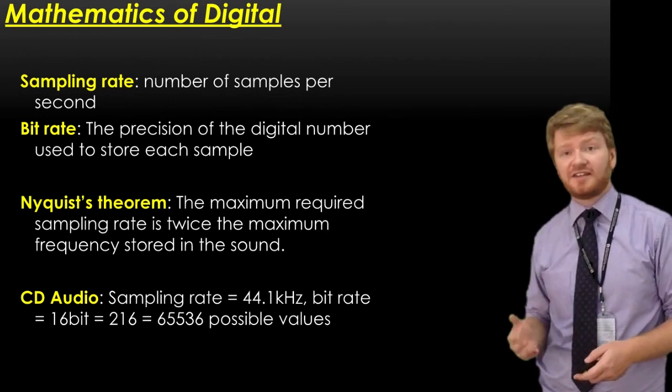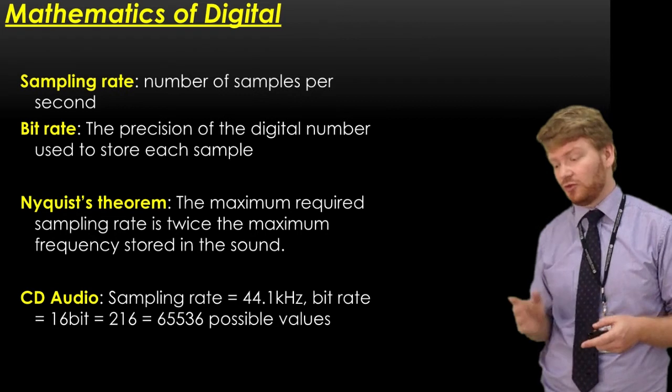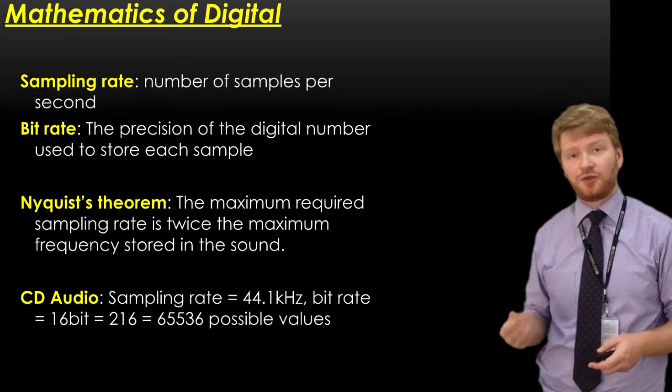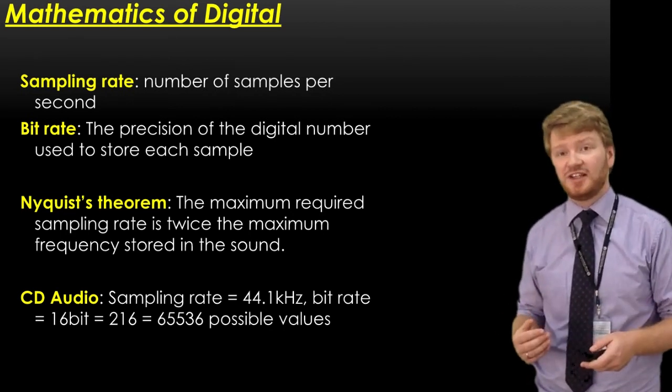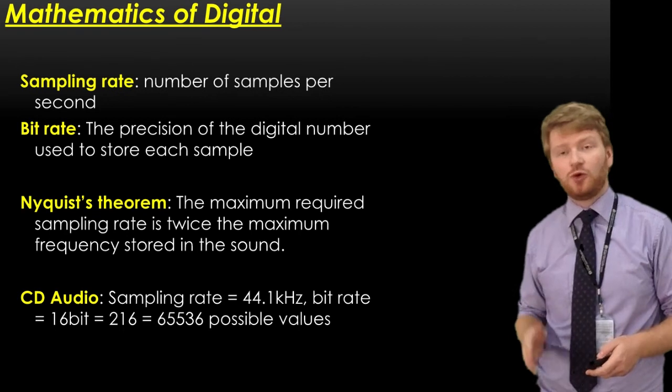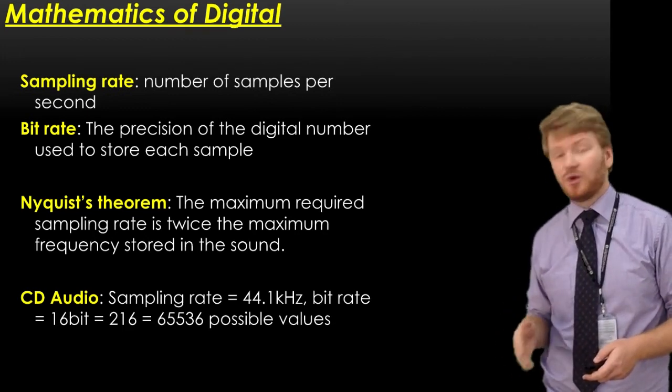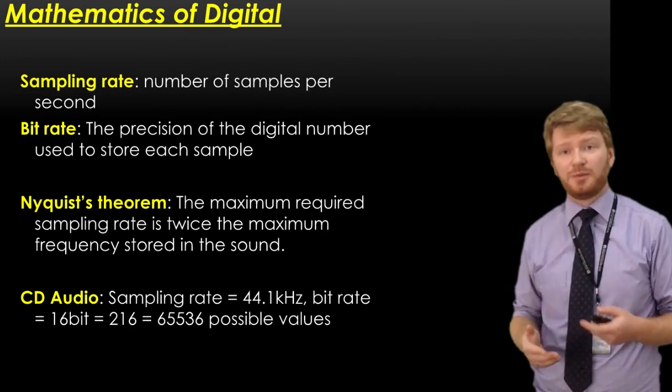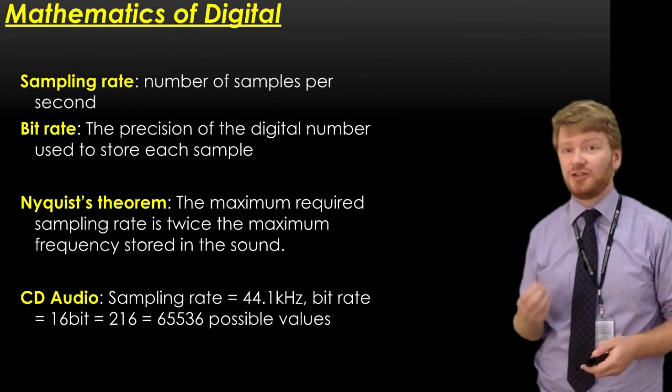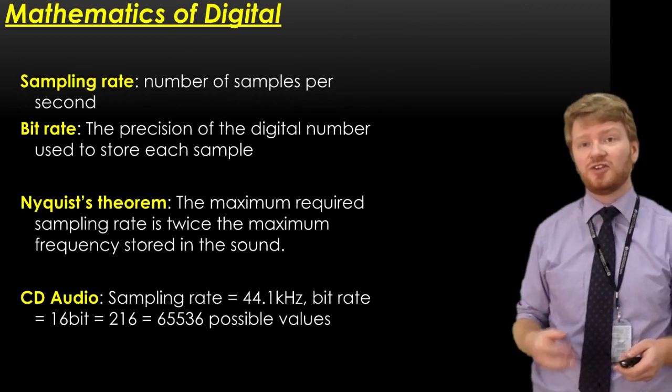The bit rate is 16 bits. 2 to the power 16 gives you 65,536 possible values. So when I record a CD, I'm taking the voltage of a microphone 44,100 times per second, and recording that voltage with a precision of my maximum voltage divided by 65,536. CD audio sampling generates huge amounts of data and gives you very good quality sound. That's why we use it for music.